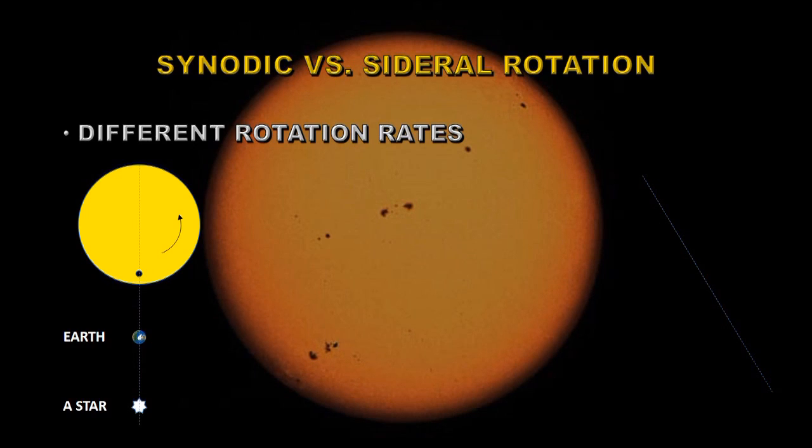When you look up the solar rotation rate you may find a number of different values. That's because there's two different types of rotation that are often quoted. In the bottom left here we have the Sun with this sunspot on it, that's the yellow disk lined up with the Earth and a distant star.